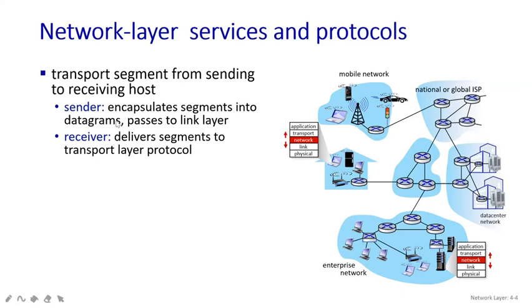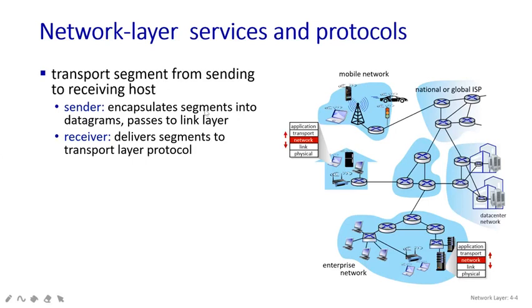On the sender side, it will encapsulate the segments into datagrams and pass them to the link layer. Below the network layer there is the link layer, so whenever any message passes it has to go through everything. If we are at the network layer, we have to pass the segments, and these segments have to be encapsulated with the datagrams. It will then cover the link layer and physical layer before going towards the receiver end.